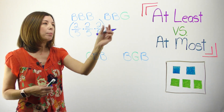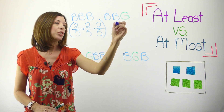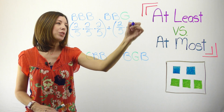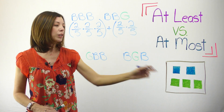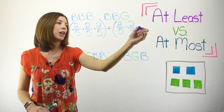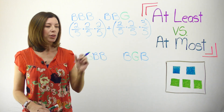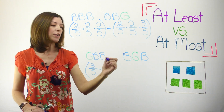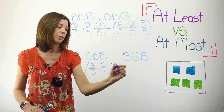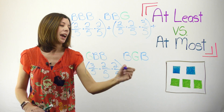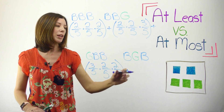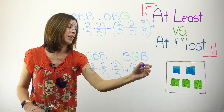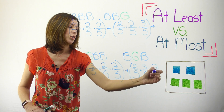Next, for the blue, blue, green scenario, I have two-fifths times two-fifths, and I'm going to be adding these together. Then for green I have three out of five, so times three-fifths. For green, blue, blue I have three-fifths times two-fifths times two-fifths. And then lastly, for blue, green, blue I have two-fifths times three-fifths times two-fifths.